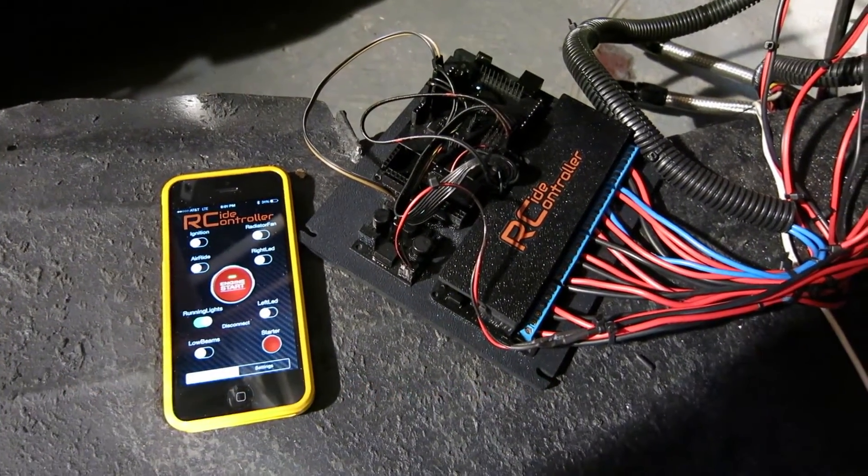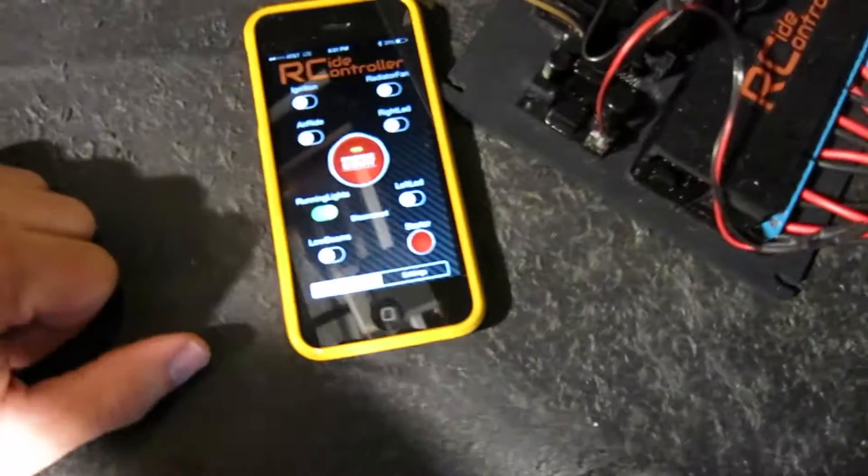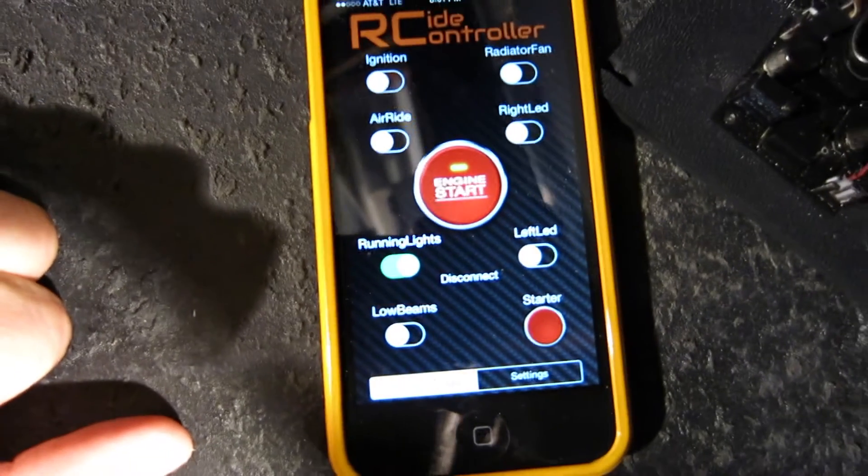So here I have my 8 circuit control center. I'm running the app which I've customized for all the inputs on my setup.